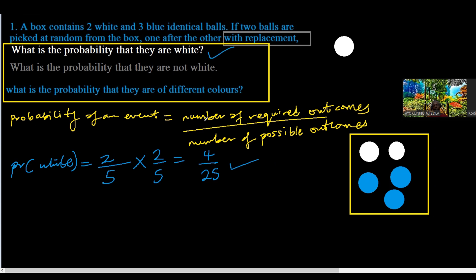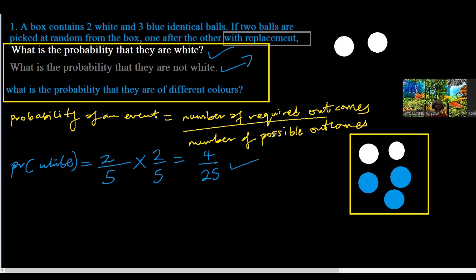That means we have answered the first question. The second question says: what is the probability that they are not white? If the two balls are not white, then they are blue. So this will be the probability of the two balls being blue for this second question.